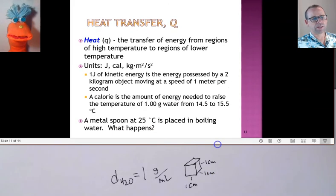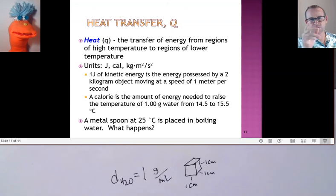So, heat is, again, the transfer of this energy. And our unit or our variable that we use for heat is Q. And heat always transfers from high temperature regions to lower temperature regions. And that makes sense in terms of the motion that we were talking about as well.